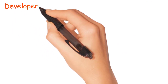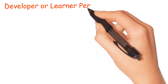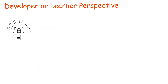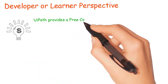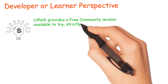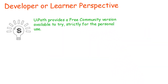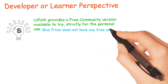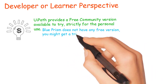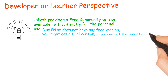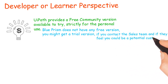Now let's look at some differences from the developer or learner perspective. Free Version: UiPath provides a free community version available to try, strictly for personal use. Blue Prism does not have any free version — you might get a trial version if you contact the sales team and they feel you could be a potential customer.